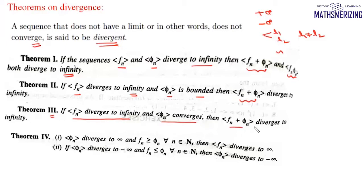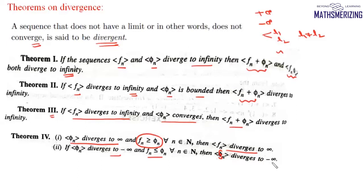The fourth theorem: if we have two sequences fₙ and φₙ such that fₙ ≥ φₙ and φₙ diverges to infinity, then fₙ also diverges to infinity. In the same way, if fₙ ≤ φₙ and φₙ diverges to minus infinity, then fₙ also diverges to minus infinity.